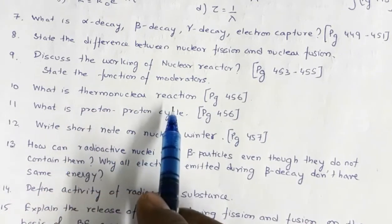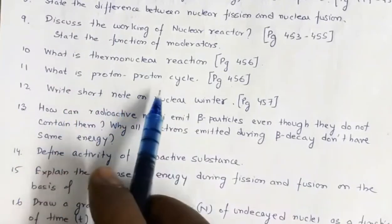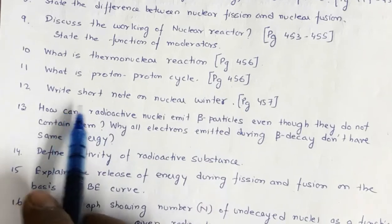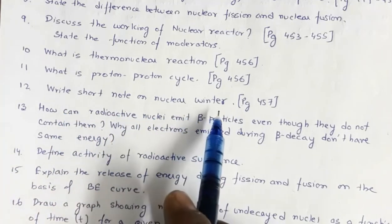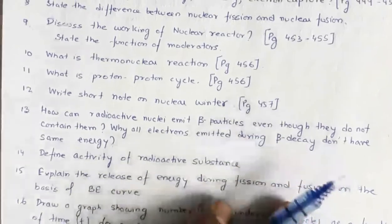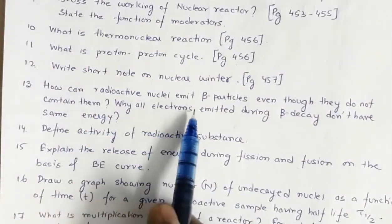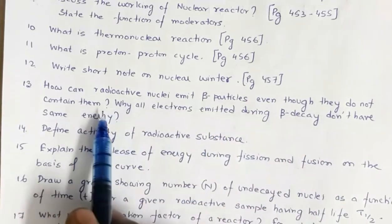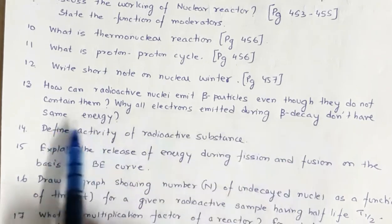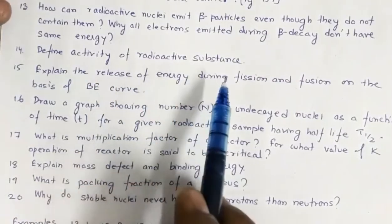Definition of thermonuclear reaction, page number 456. What is proton-proton cycle? So this is given in page number 456. Write short note on nuclear winter, that is in blue color portion in page number 457. How can radioactive nuclei emit beta particles even though they do not contain them? Why all electrons emitted during beta decay don't have same energy? Define activity of radioactive substance.